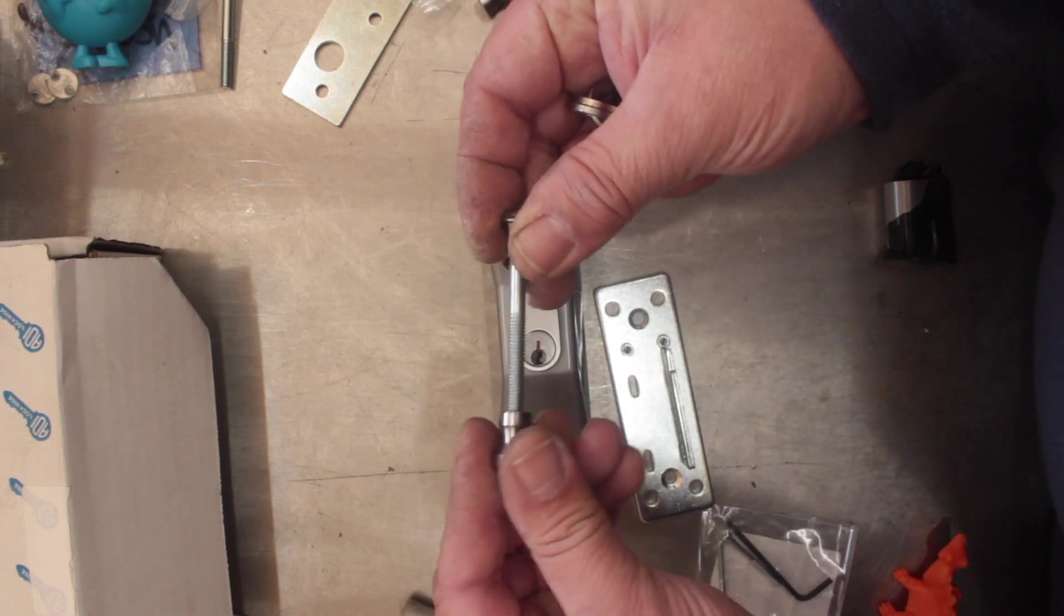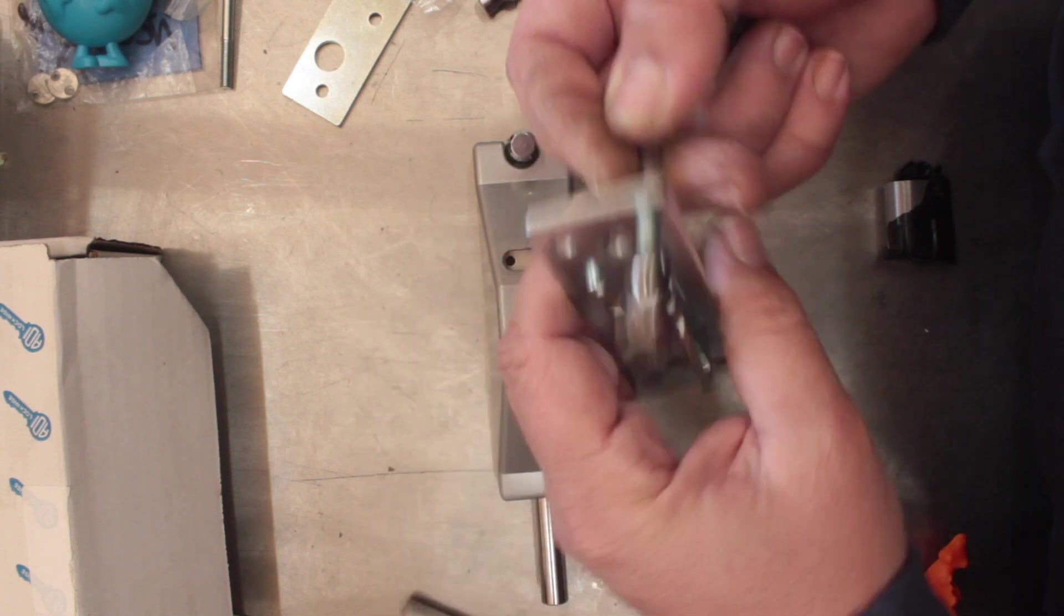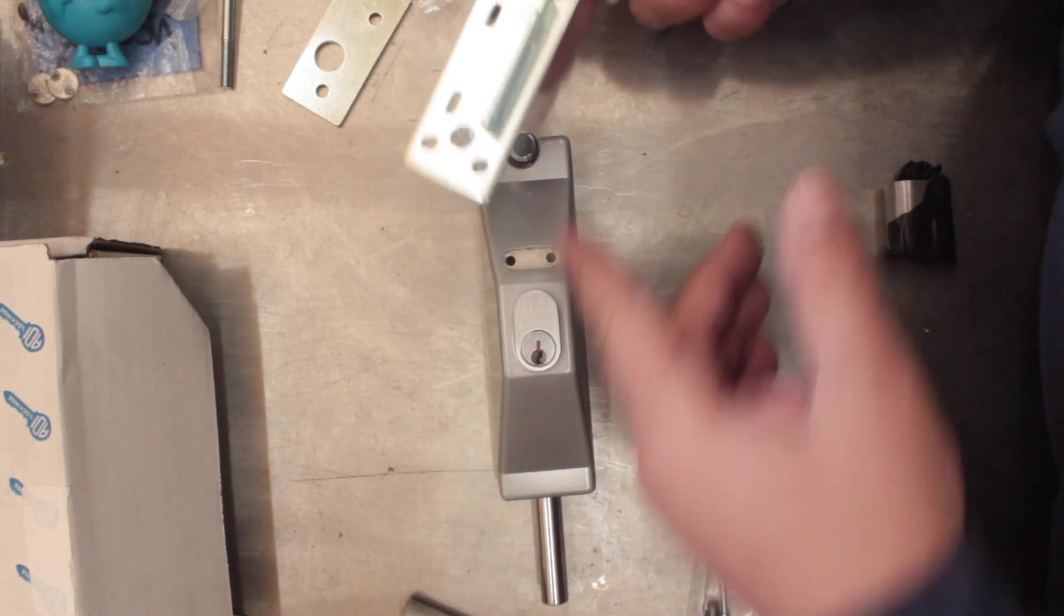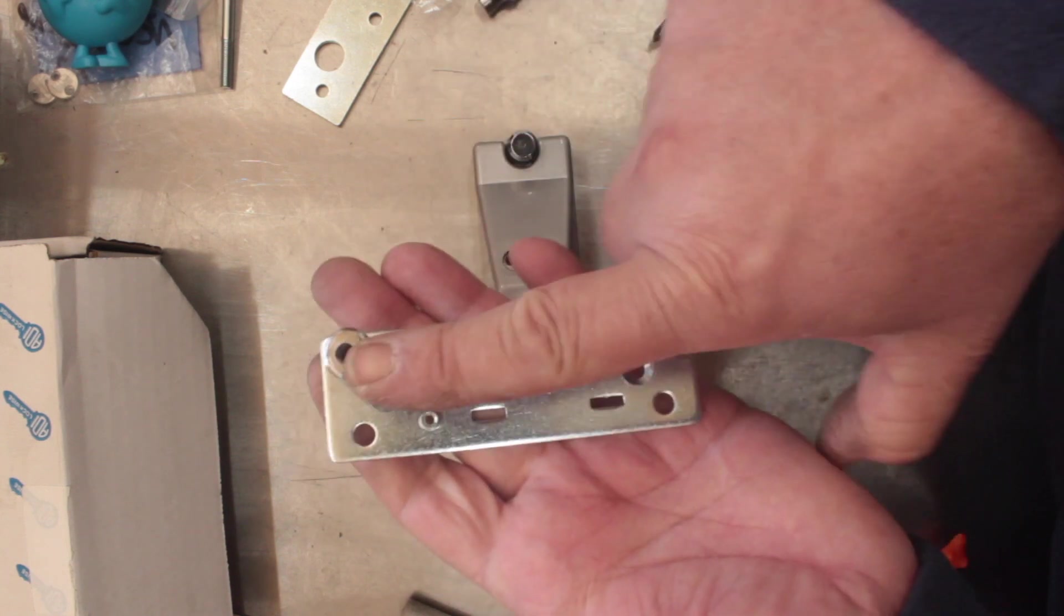And once the lock body is attached to the door, then you go through and put your pin through. Very important that you get these rollers square and straight so that pin can slide up straight through the middle.